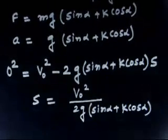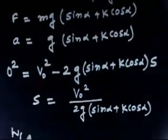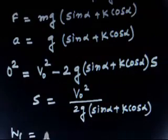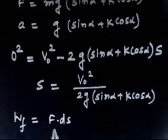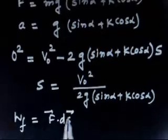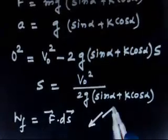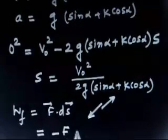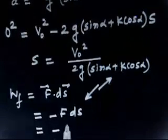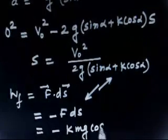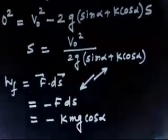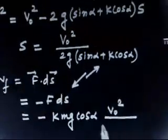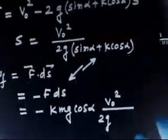Now we have to find the work performed by the friction force. Work done is F · ds. The friction force and displacement are opposite in direction — friction acts downward along the incline and displacement is upward — so cos theta is 180°. Therefore work done by friction is minus f times distance, where friction force is k·mg·cos alpha and the distance is v₀² / [2g(sin alpha + k cos alpha)].